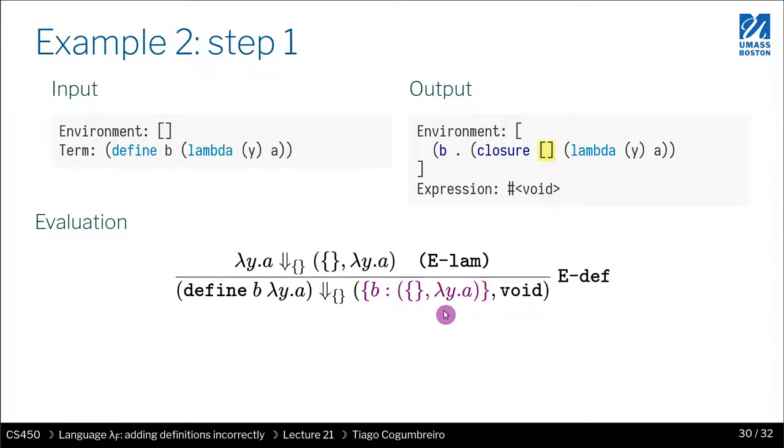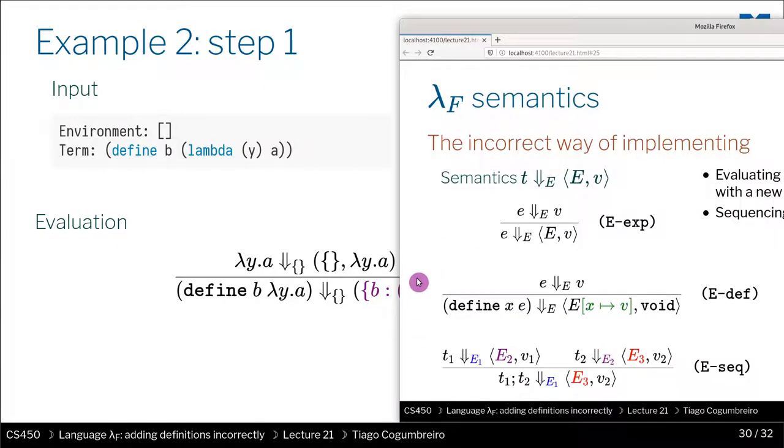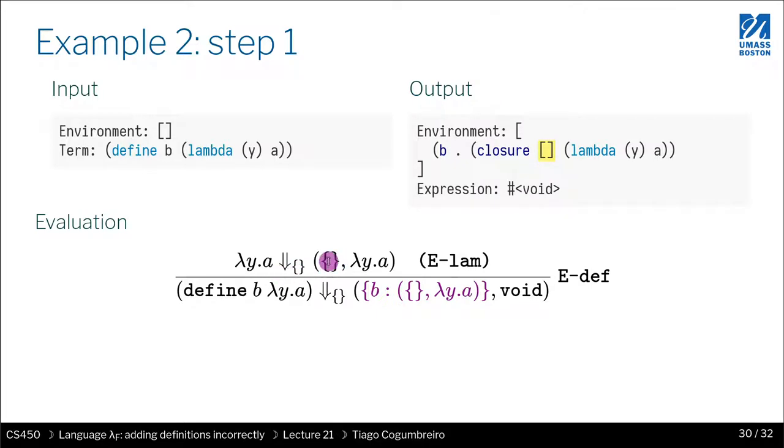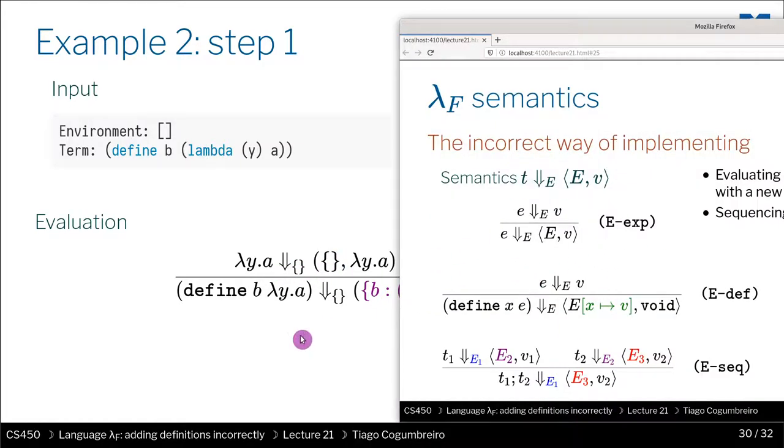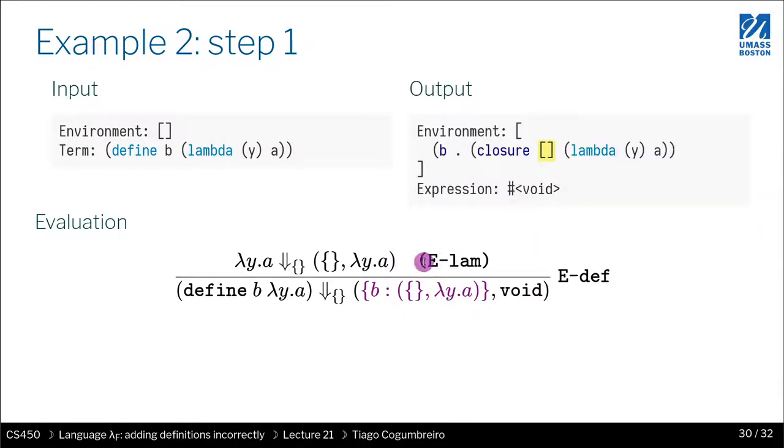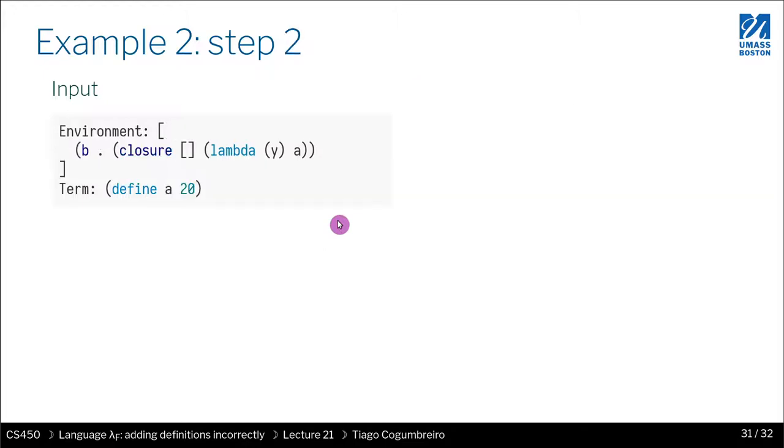So why do we have that? Well, we use the rule for define, as we were mentioning before, and then we use the rule for lambda, which returns a closure. That is not here in this slide. But we're applying internally this rule, which is doing the evaluation of the lambda. And this represents the empty environment.